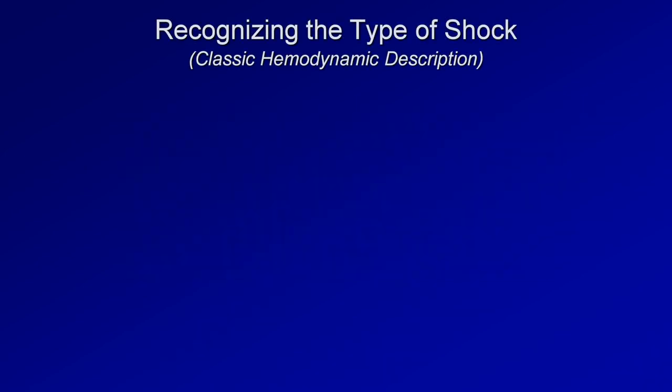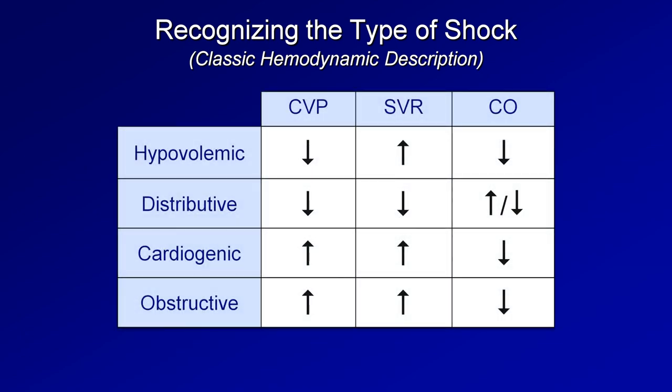Recognizing the type of shock present in a critically ill patient is sometimes easy and sometimes very challenging. There's a classical description of how to determine this based upon the central venous pressure, systemic vascular resistance, and the cardiac output. Here's a table that's frequently reproduced in medical, surgical, and ICU textbooks.